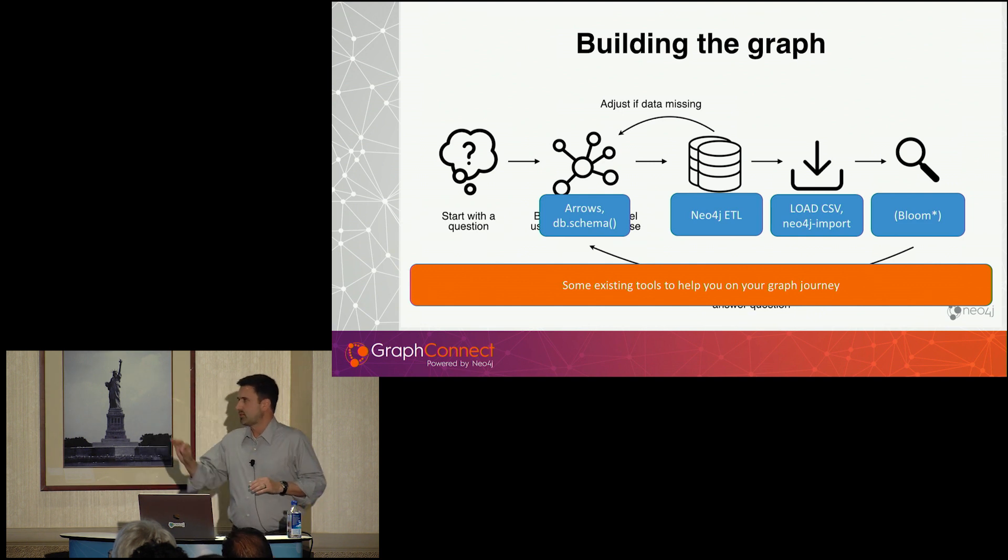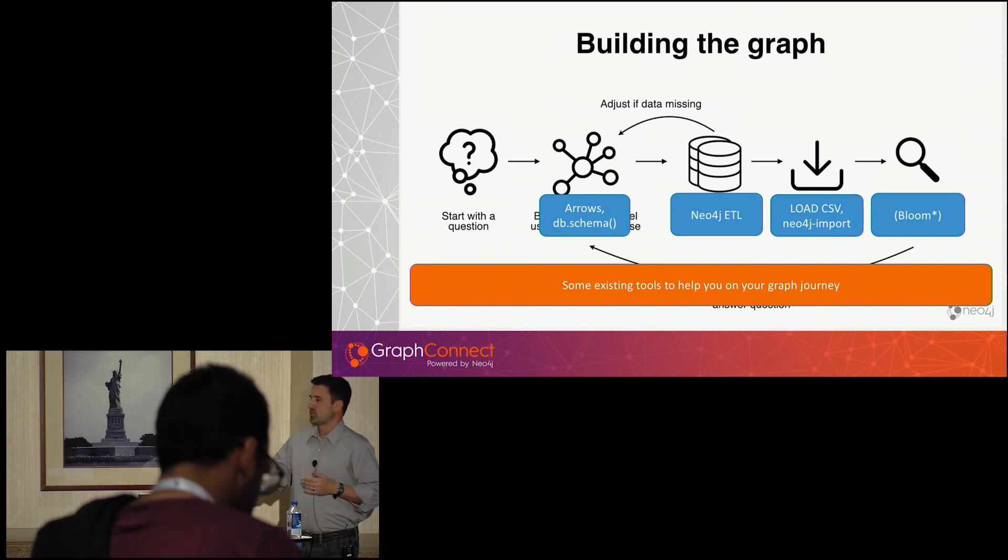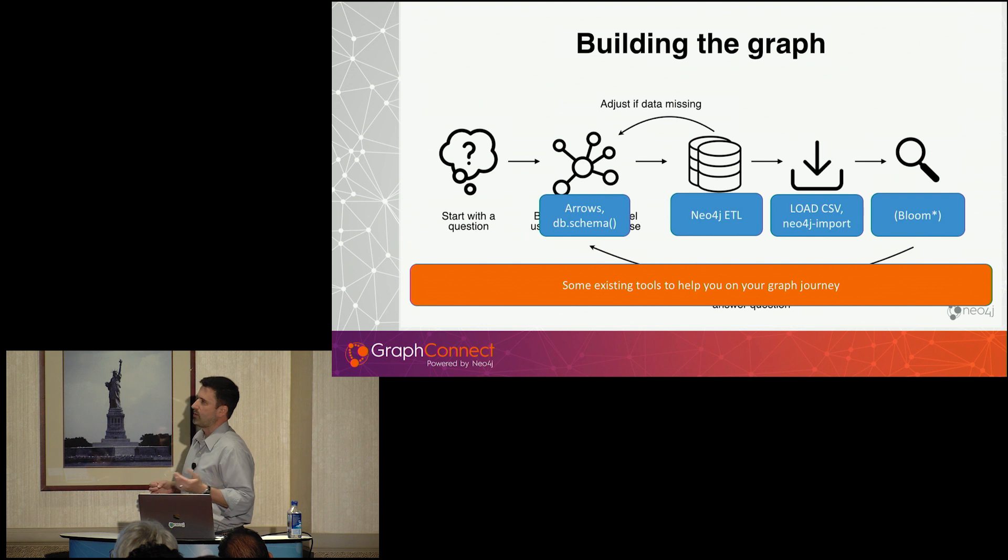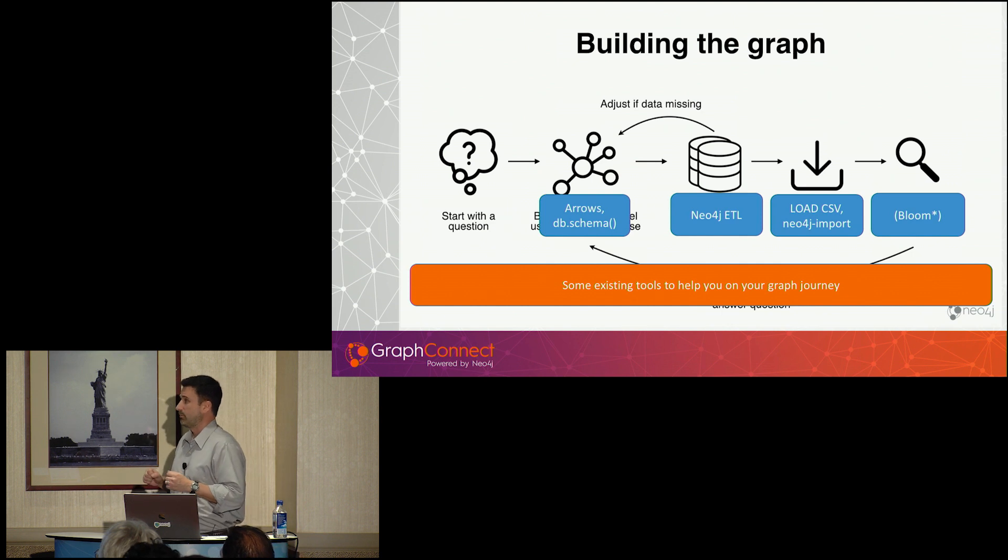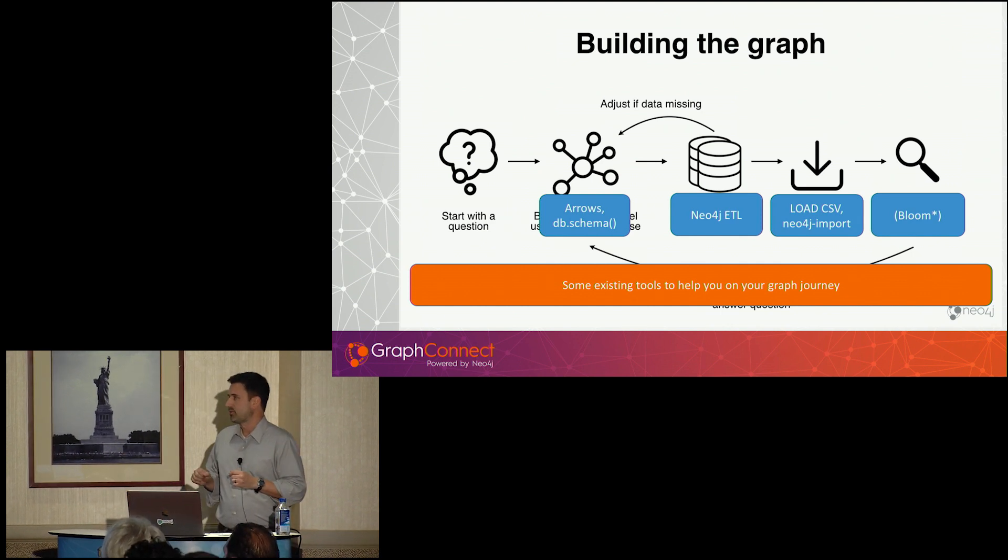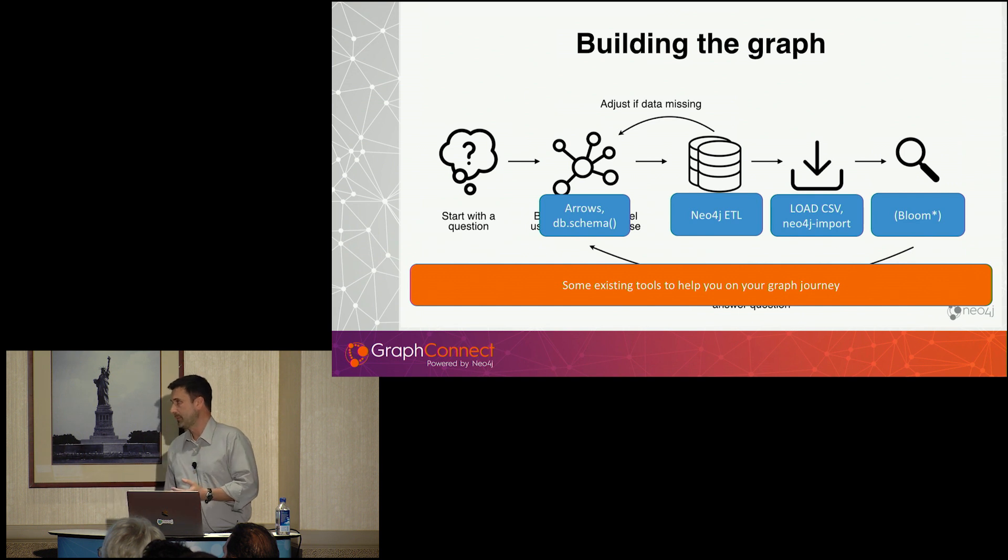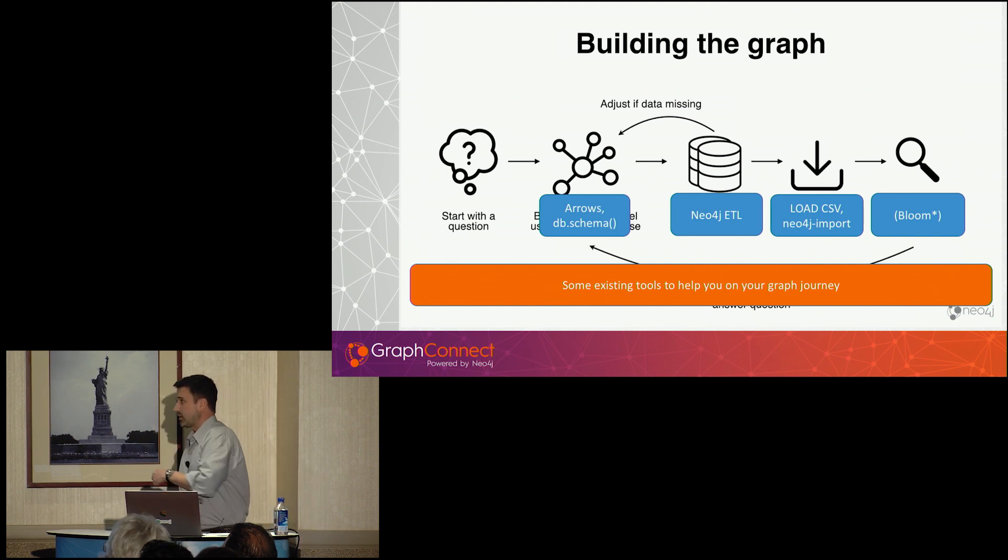This slide shows you a few of the tools that are in the ecosystem to help you out with this process. One of which is Arrows, which has been around for a number of years. You may have used it already, or you may have seen its output in something like Max DiMarzi's blog post. It's also DBSchema, which shows you the model that exists if you have an existing graph database. And over here on the right, there's our friend LoadCSV, which is the workhorse if you're importing data into the graph.